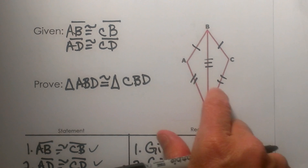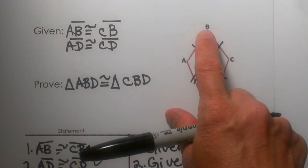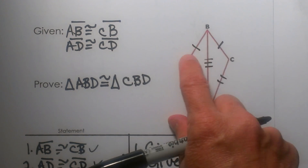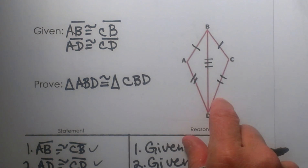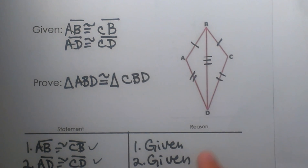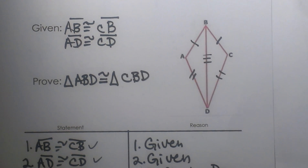That proves that the triangles have to be congruent, meaning all three sides are congruent and all three corresponding angles are congruent. Voila! We're done!